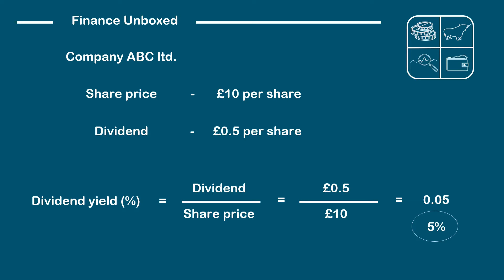One thing to keep in mind is that the dividend in this case is an annual dividend. Some companies will distribute dividends on a quarterly basis, so if this dividend was quarterly the dividend yield would be 20% — that's 0.5 times 4, divided by 10, which gives you 20%.